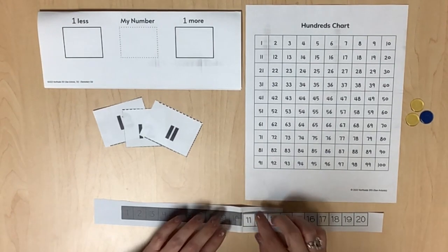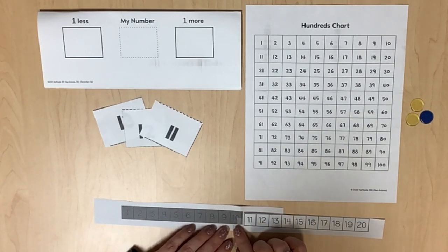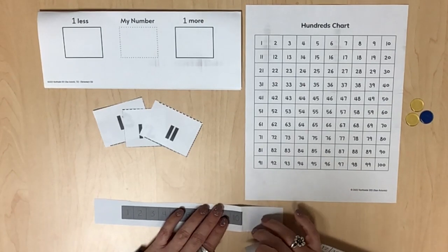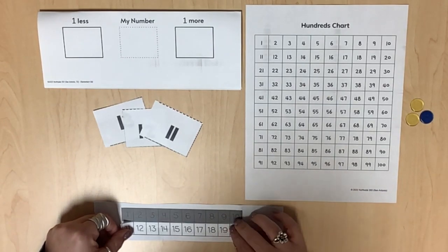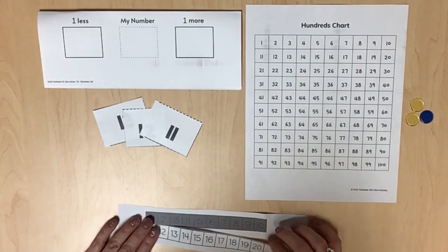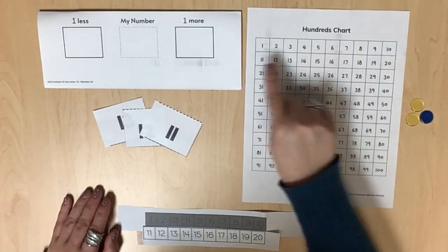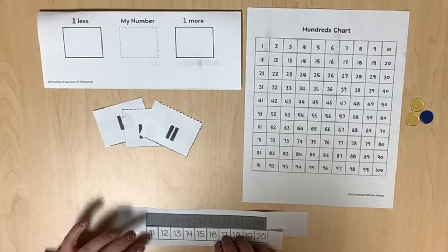Bring the shading to students' attention once again as a hundreds chart will be created using these parts of the path. Cut the number path in between 10 and 11 and put these paths one on top of the other. Show a hundreds chart and explain how these two rows of the number path are the same as the top two rows of the hundreds chart.